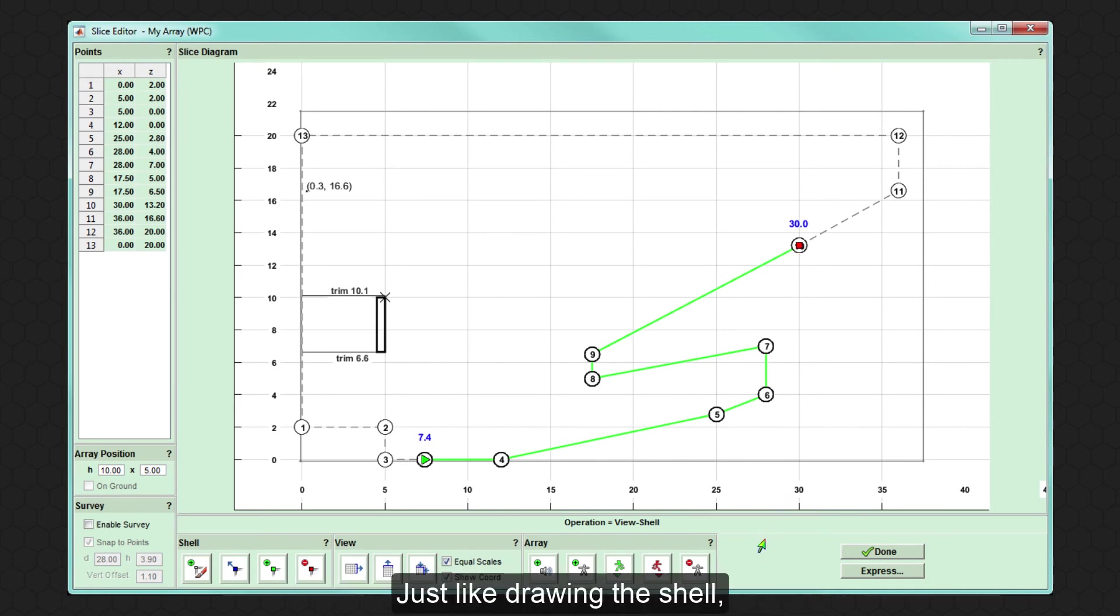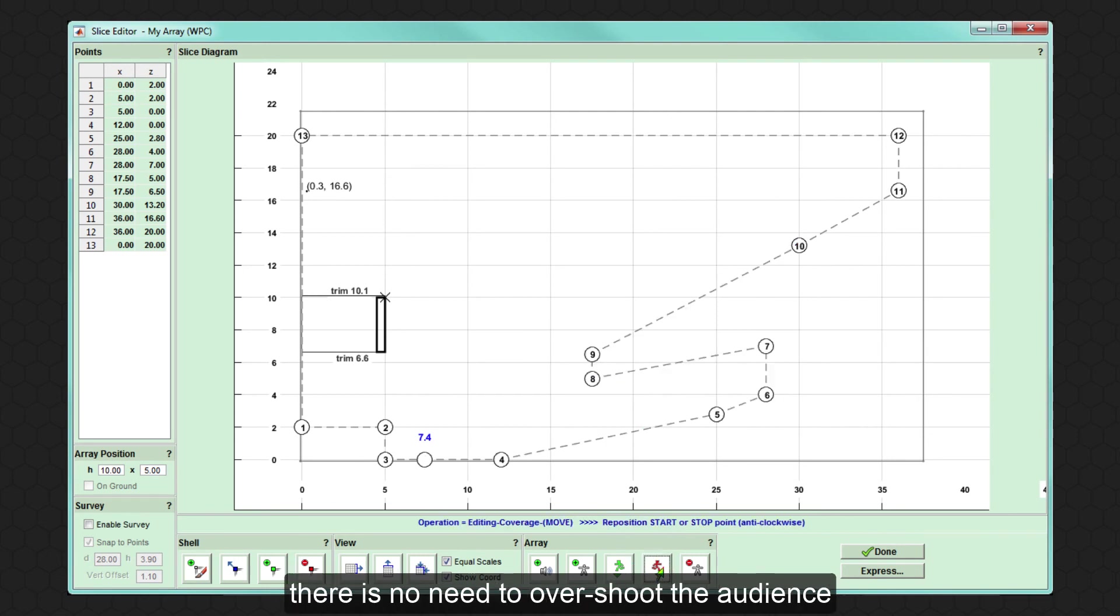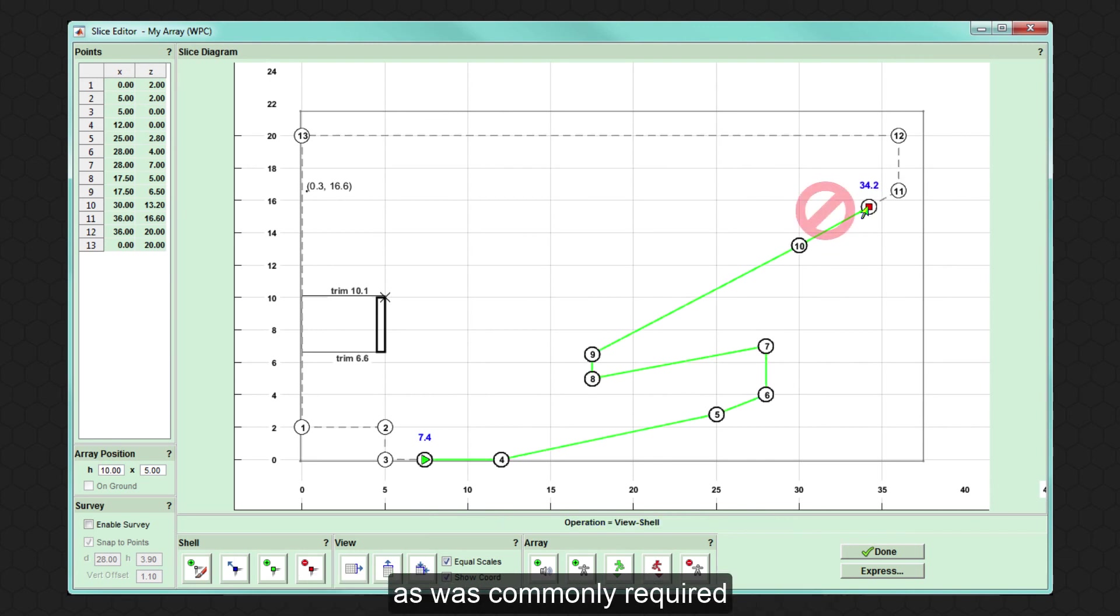Just like drawing the shell, the audience must be drawn in an anti-clockwise direction from the start of the audience right through to the final audience position. As display optimizes the array for the audience coverage and accounts for audience offsets, there is no need to overshoot the audience at the back of the venue as was commonly required with conventional line array systems.